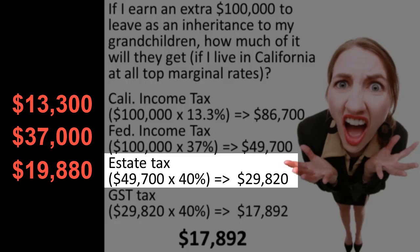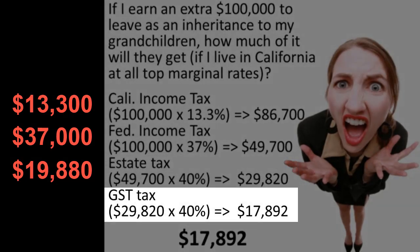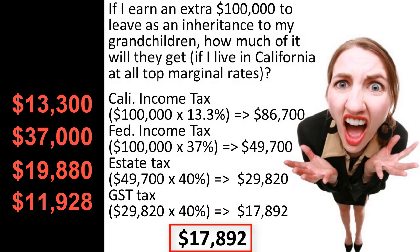However, if the grandchildren's parents were still alive, this estate transfer would skip a generation and thus be subject to the generation-skipping transfer tax. This generation-skipping transfer tax would generate an additional 40% tax on the remaining $29,820, costing $11,928 and leaving $17,892 for the grandchildren. Although certainly not commonplace, this extreme example shows just how important tax planning can be in the face of such potentially extreme tax consequences.